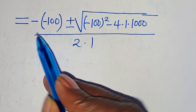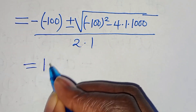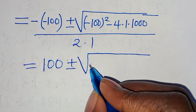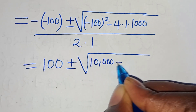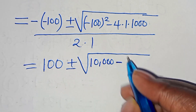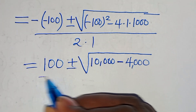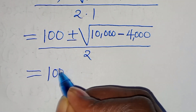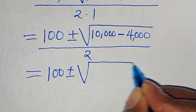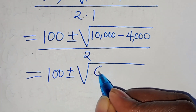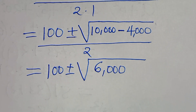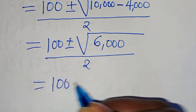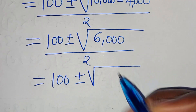Now minus times minus 100 equals 100, plus or minus the square root of (minus 100) squared, which is 10,000, minus 4 times 1,000, which is minus 4,000, everything divided by 2. So we have 100 plus or minus the square root of 10,000 minus 4,000. This implies again we have 100 plus or minus the square root of 6,000, everything divided by 2.